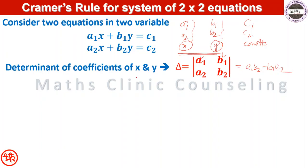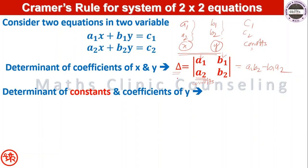From delta, we replace the coefficients of x by the constants c1, c2. You get a new determinant called delta_x — the determinant of constants and coefficients of y. So delta_x equals the determinant with first column [c1, c2] and second column [b1, b2], which evaluates to c1·b2 minus b1·c2.